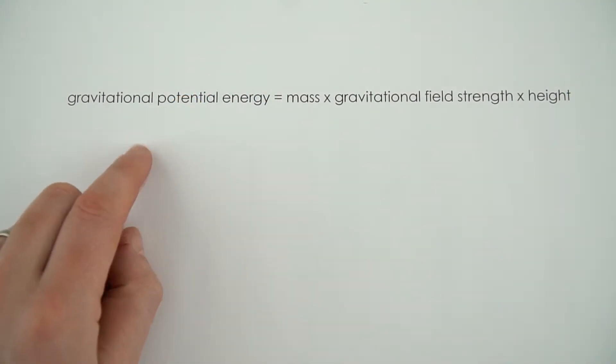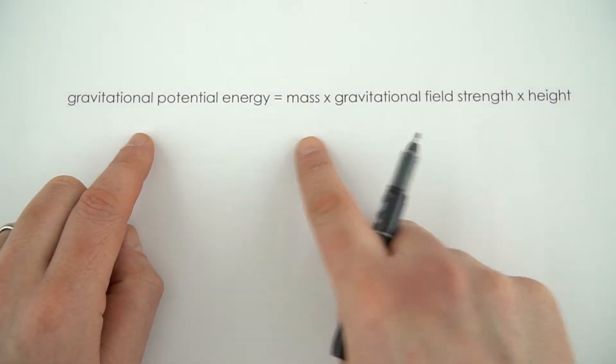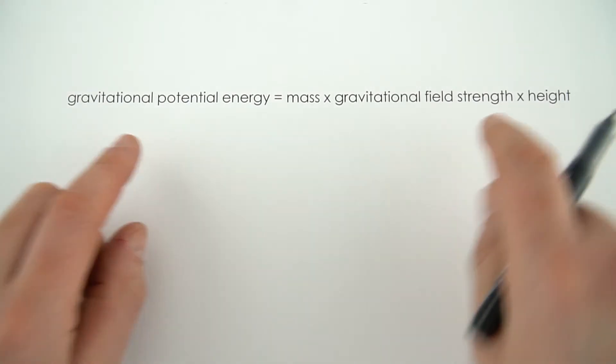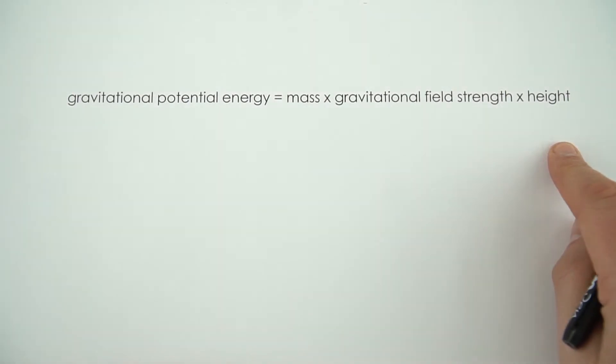To work out the change in gravitational potential energy is equal to mass times the gravitational field strength times the height. Obviously it's quite long to write it all out like this every time.